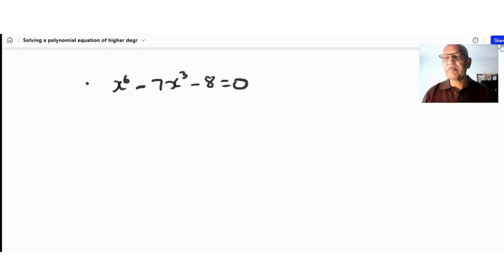Today our lesson will be an example of solving a polynomial equation of higher degree. We are given x^6 - 7x^3 - 8 = 0. How do I solve this? It looks like a trinomial, but I can't change it directly to make it easier.